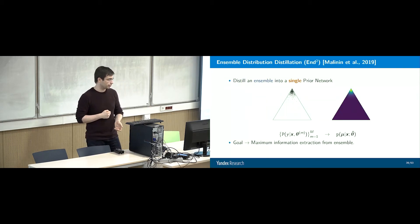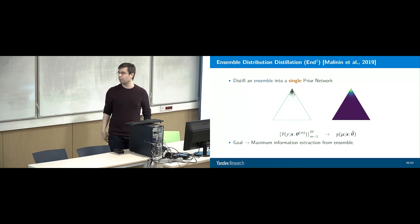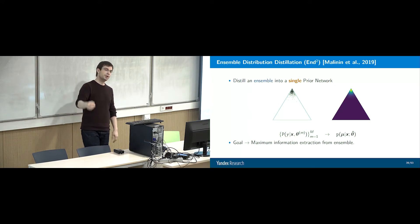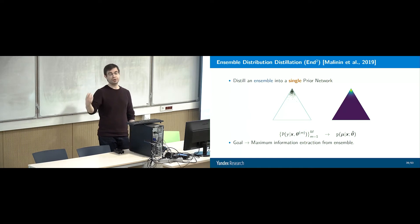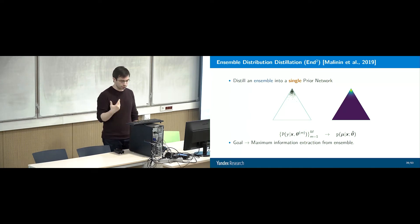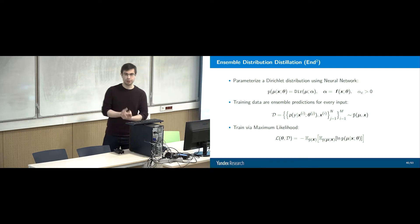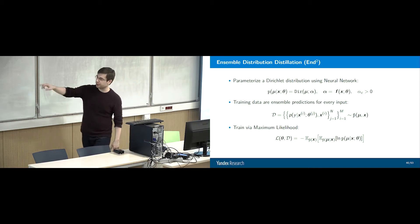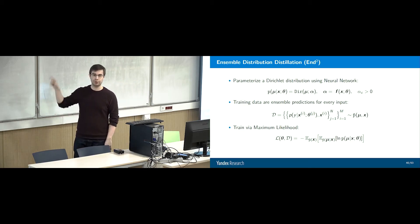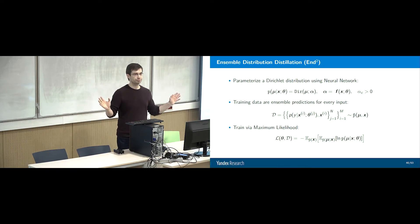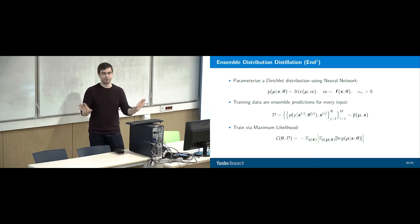Ensemble distribution distillation is a simple idea: why not distribution-distill the entire ensemble into a prior network, so it captures both the mean — enhanced classification accuracy — and also measures of diversity of the ensemble. The goal is to maximally preserve all the information available. This is done simply: the model predicts the parameters of a Dirichlet distribution defined on the simplex. For every X we have M discrete distributions, and we maximize the likelihood of those distributions under the Dirichlet for those inputs. Just direct application of maximum likelihood estimation.